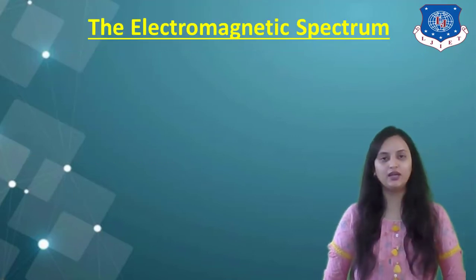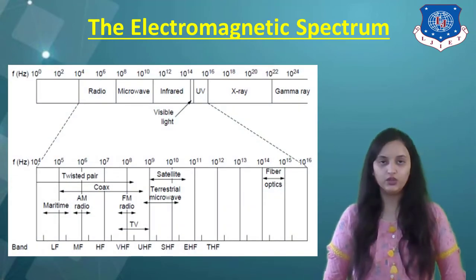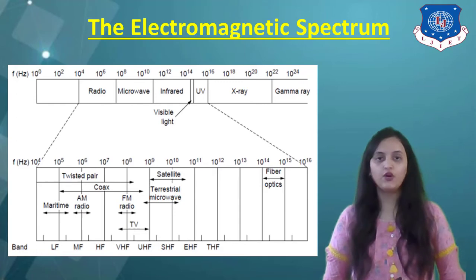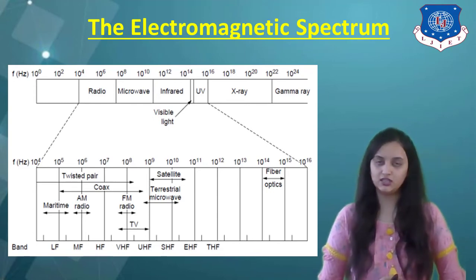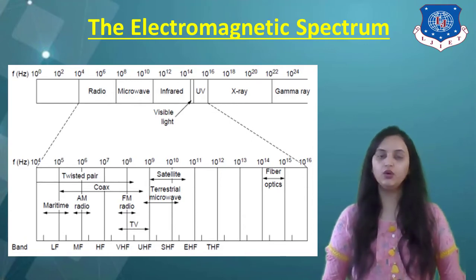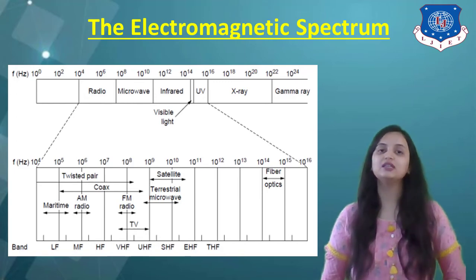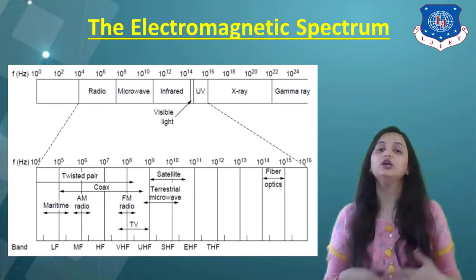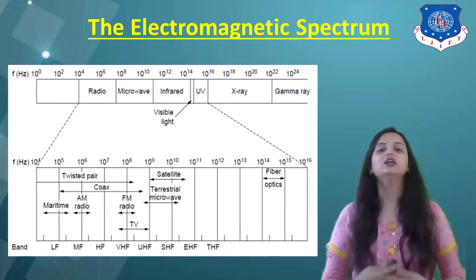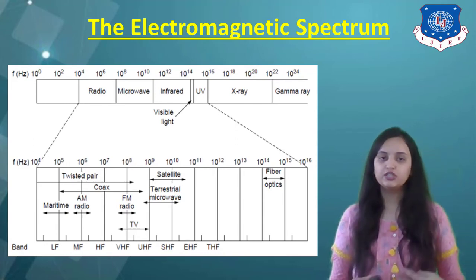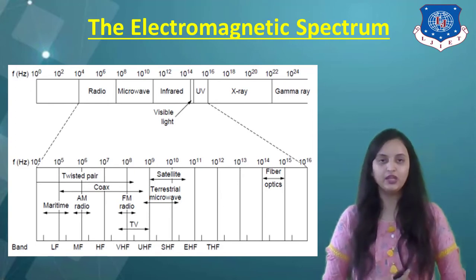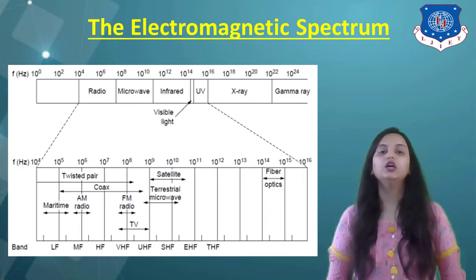The electromagnetic spectrum is shown here, with different frequency ranges and their applications. Frequency ranges cover radio waves, microwaves, infrared, UV rays, X-rays, gamma rays, and visible light — each falling into a specific frequency range. The frequency bands include lower, medium, high, very high, and super high frequency bands. According to the frequency band, there are specific applications, whether radio transmission, maritime, or satellite applications. Understanding the electromagnetic spectrum and its ranges is essential for knowing which frequencies can be used to transmit data.